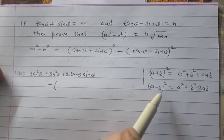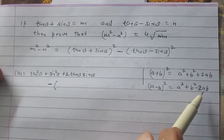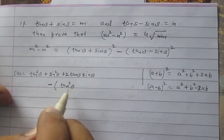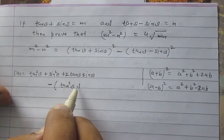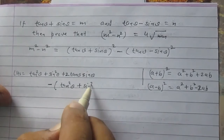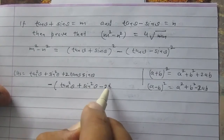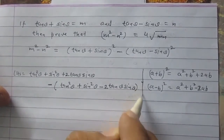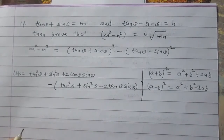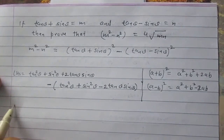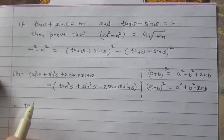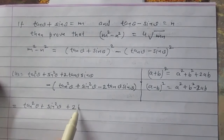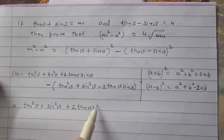For -(tan θ - sin θ)², using the identity (a - b)² = a² + b² - 2ab, it becomes minus of (tan²θ + sin²θ - 2·tan θ·sin θ). So the first part remains tan²θ + sin²θ + 2·tan θ·sin θ, and the second part after opening the bracket gives -tan²θ - sin²θ + 2·tan θ·sin θ.